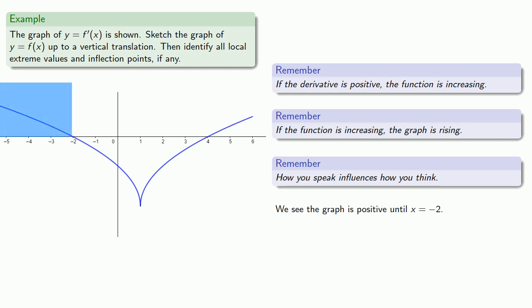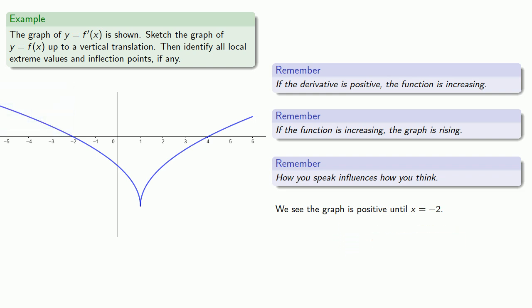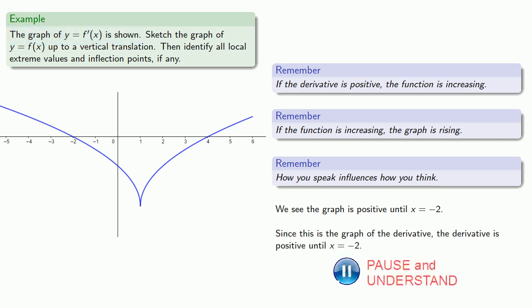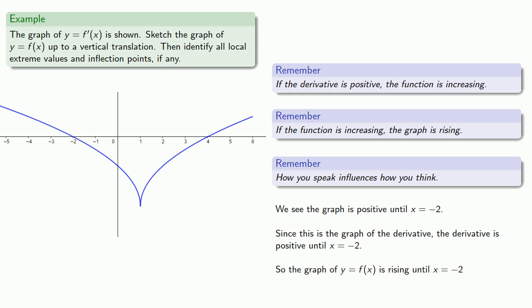We see that the graph is positive until x equals negative 2. Since this is a graph of the derivative, this means that the derivative is positive until x equals negative 2. So the graph of y equals f of x is rising until x equals negative 2.